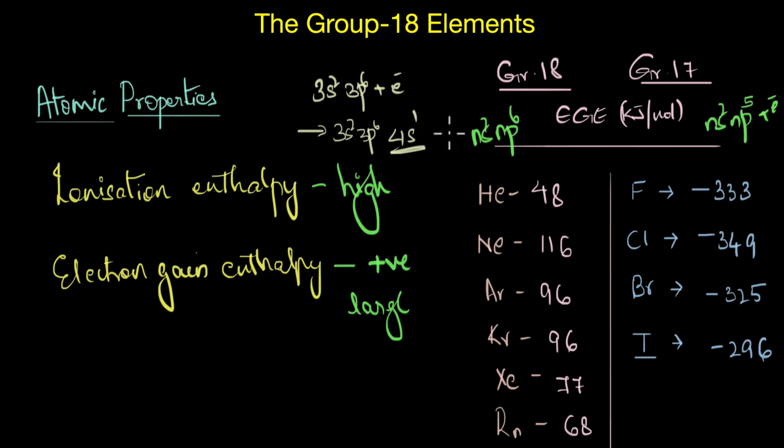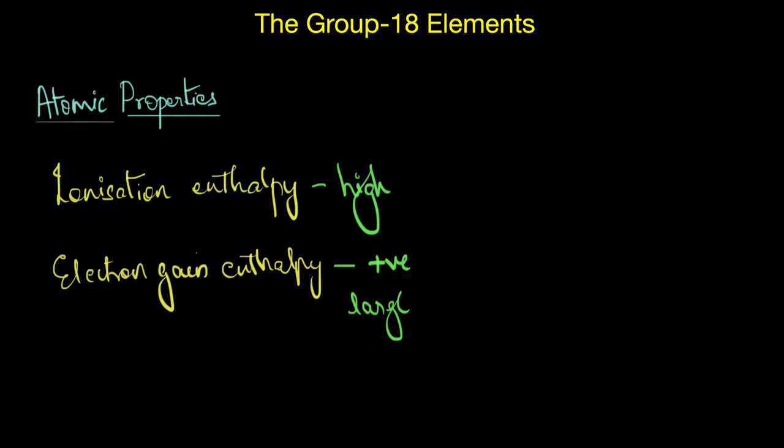Okay, so we are done with ionization enthalpy and electron gain enthalpy. Let's now look at atomic radius. Being monoatomic gases, the non-bonded radii of Group-18 elements is very large. That is why we usually compare their atomic radii with van der Waals radii of other elements and not covalent radii.